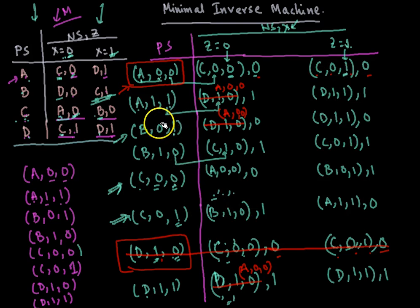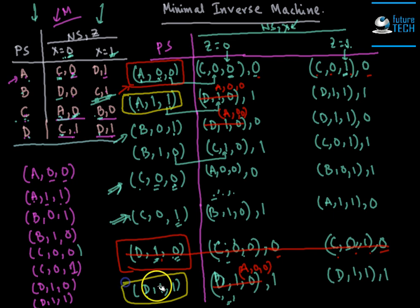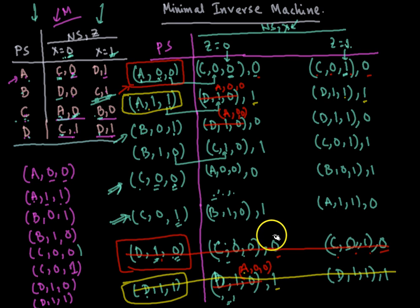Next, (a,1,1) and (d,1,1) are also identical — both go to (a,0,0) producing one and to (d,1,1) producing one. We eliminate (d,1,1) and retain (a,1,1). All occurrences of (d,1,1) on the right-hand side are converted to (a,1,1).